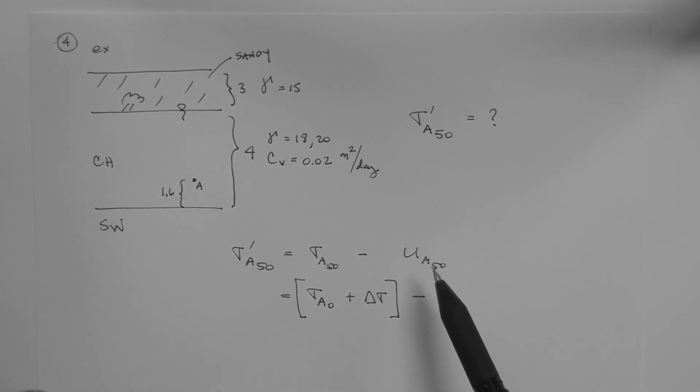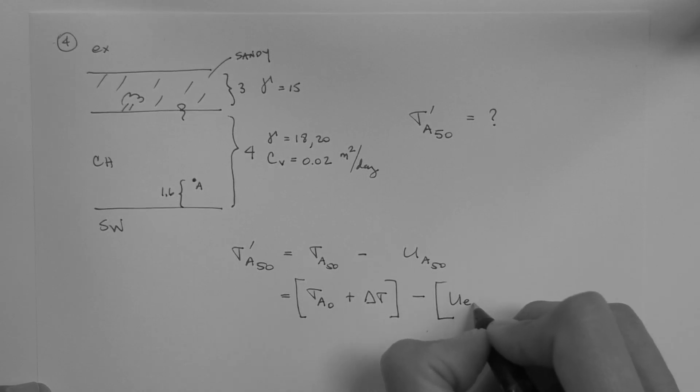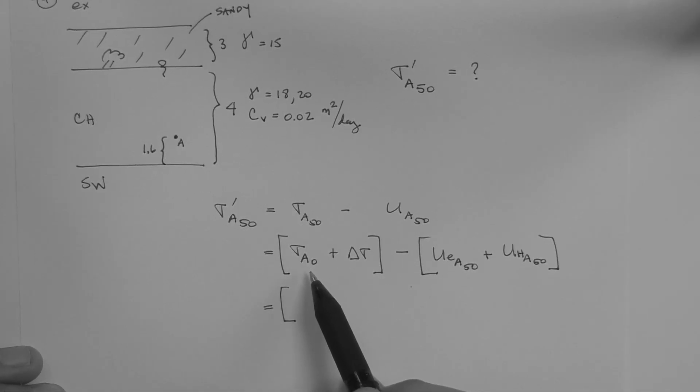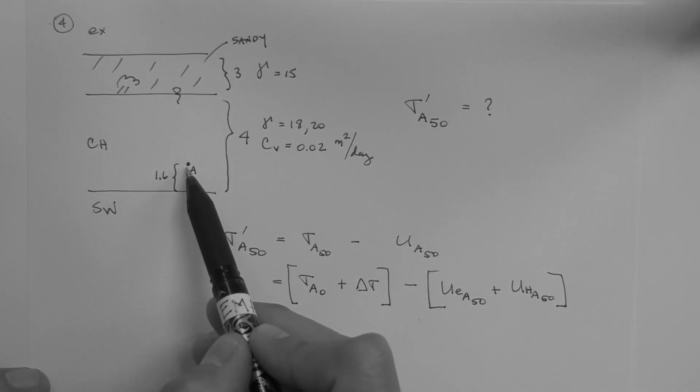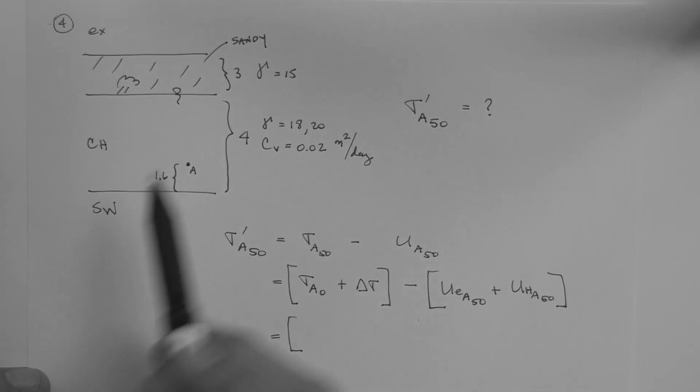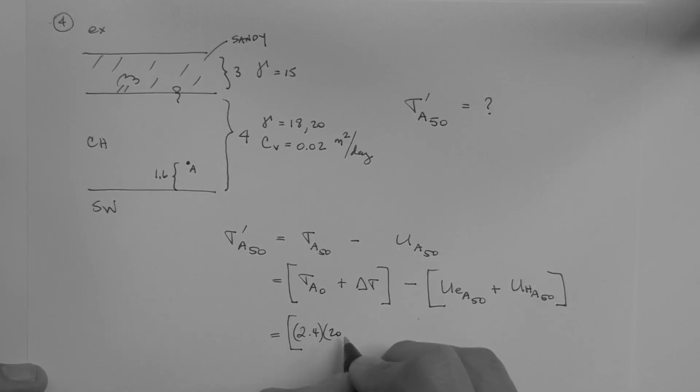The pore pressure at point A at time equals 50 is the excess pore pressure at point A at time equals 50, plus the hydrostatic pore pressure at point A at time equals 50. Total stress at time equals zero, no fill. Here's the point. What is this distance? 2.4 meters. 2.4 times the unit weight of saturated soil is the stress, total stress.